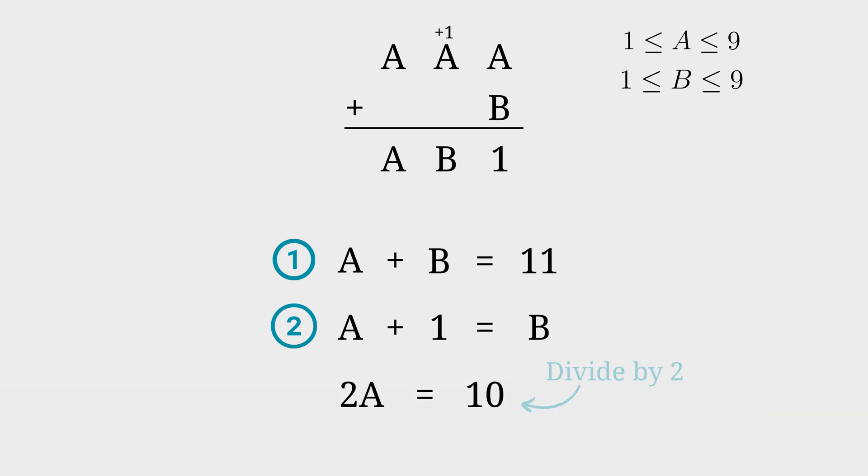To isolate the A, divide both sides by the coefficient 2, then 10 divided by 2 is 5, so A will be equal to 5.